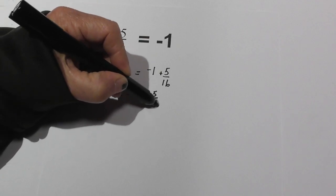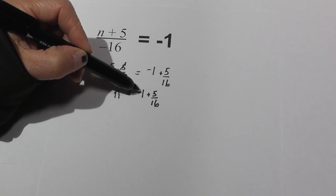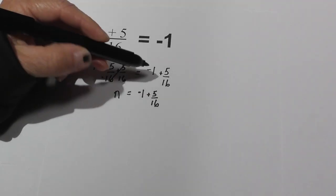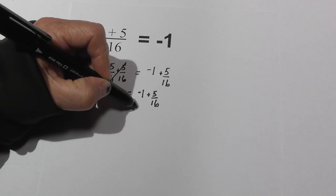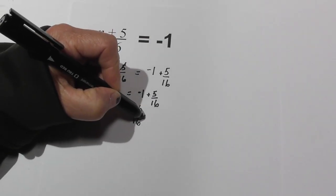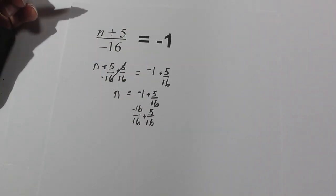Now what we can do is rewrite this negative 1 using the denominator of the fraction. We can rewrite that as negative 16 over 16 plus 5 sixteenths.